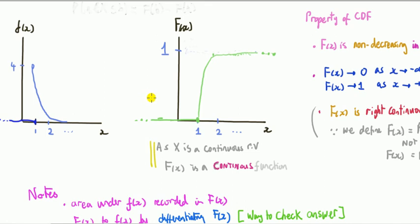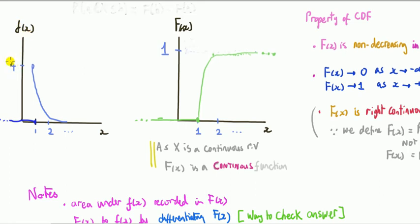Let's put the PDF and CDF side by side. The x-axis is the same for both. The CDF goes from zero to one on the vertical axis — it's a probability, so it must stay between zero and one. The PDF, however, is not a probability mass function; it's not a probability. Values of the PDF do not have to be between zero and one. It only needs to be non-negative — it can exceed one, as it does here.